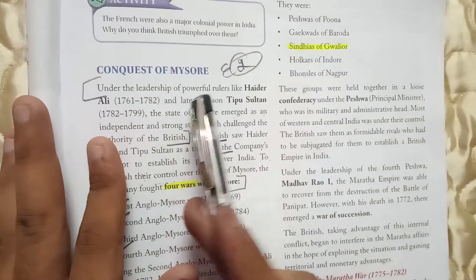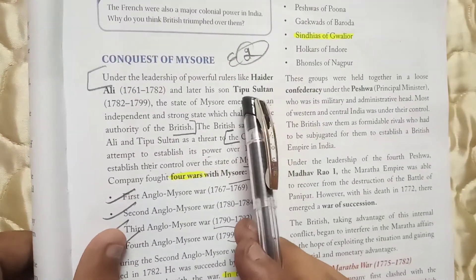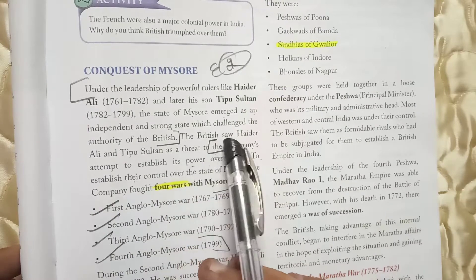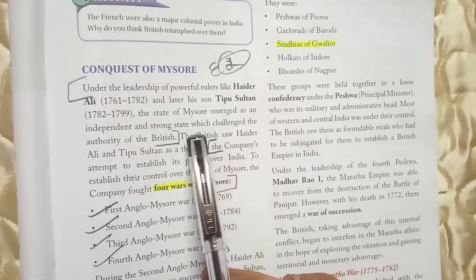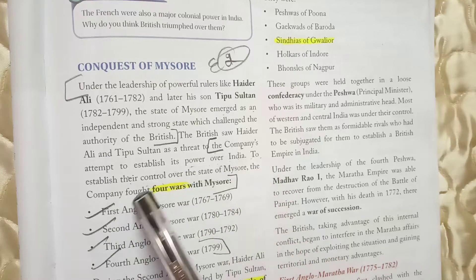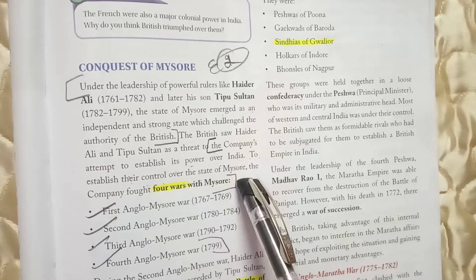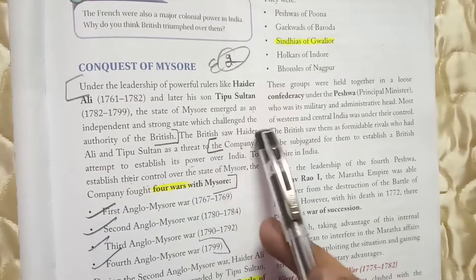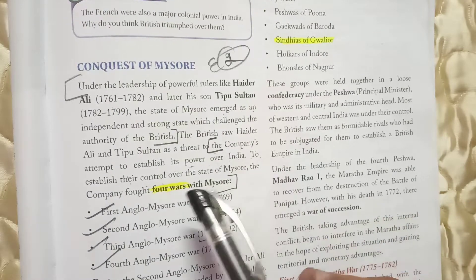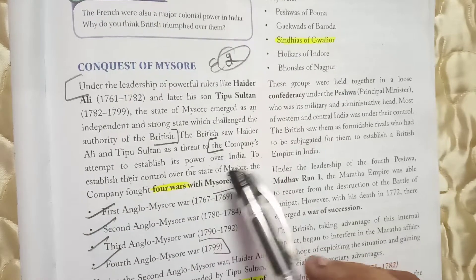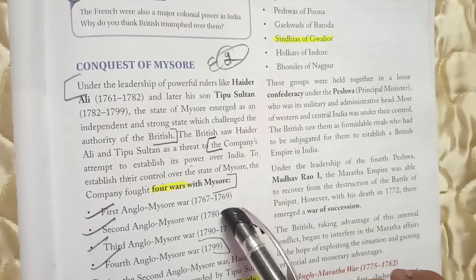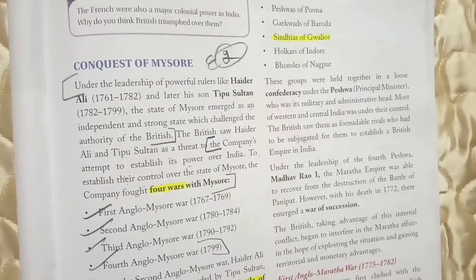Regarding military conquest, the first major example is the conquest of Mysore. Under the leadership of powerful rulers Hyder Ali and later his son Tipu Sultan, the state of Mysore emerged as an independent and strong state which challenged British authority. The British saw Hyder Ali and Tipu Sultan as a threat to the Company's attempt to establish its power in India. As a result, the Company fought four Anglo-Mysore Wars: 1767–69, 1780–84, 1790–92, and 1799.